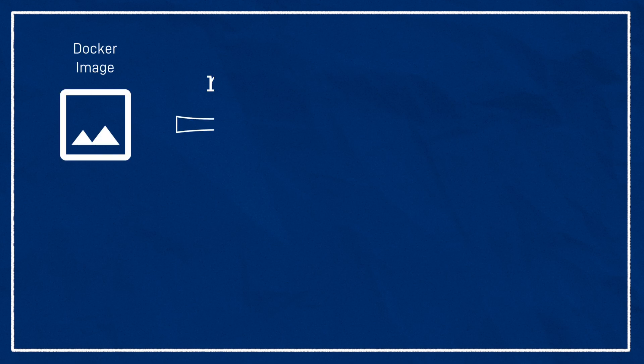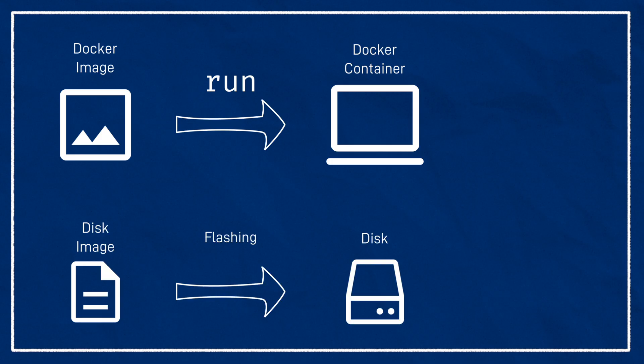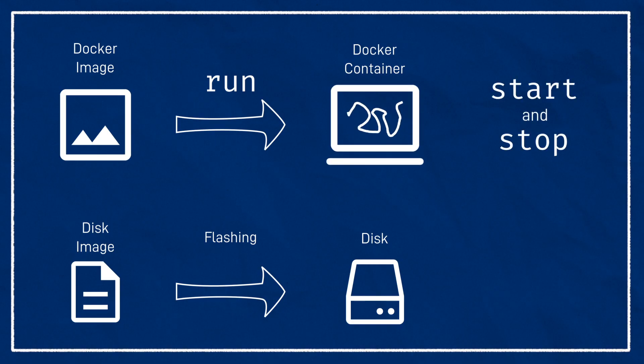We can run a Docker image to create a container — this is kind of like when we flash an image to a hard drive ready to use it. Once we have a container running, we can get in there, launch programs, edit files, and so on. We can also start and stop our container, just like we'd start up and shut down a computer or a VM. It's worth noting the language here: when we talk about running a container or image, that is the process of generating the container from the image, which will also start it up for us the first time. If we then stop and start the container, it'll retain any changes we've made. But if we run it again, that's just like flashing over the hard drive — it'll wipe away any changes.